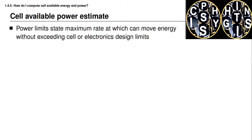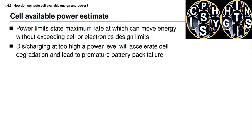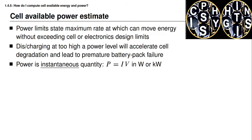Power limits state the maximum rate at which we're able to move energy into the battery cell or out of the battery cell without exceeding electronics design limits or some battery electrochemical design limits. If I attempt to discharge or charge a cell at too high a power level, I will accelerate the rate of degradation and that will lead to a premature battery pack failure. Energy is a total quantity — the quantity that describes a total amount of work that can be done — while power is an instantaneous quantity that refers to the rate at which we can do work. Power is equal to voltage multiplied by current and it's measured either in watts or in kilowatts.